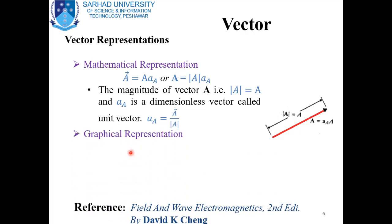For the graphical representation of a vector, we use a straight line segment which represents the magnitude part of the vector, with an arrowhead at one end. If the length of a vector is larger, its magnitude will be larger; if the length is shorter, then the magnitude of the vector will be smaller.